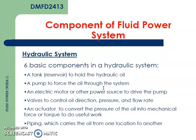There are six basic components for a fluid power system. In a hydraulic system: first, an oil tank to hold the hydraulic oil; second, a pump to force the oil into the system; third, an electrical motor or other power source to drive the pump; fourth, valves to control oil — categorized under directional control valve, pressure control valve, and flow control valve; fifth, actuators to convert pressure into mechanical force or torque; and sixth, a piping system to carry the oil from one location to another.